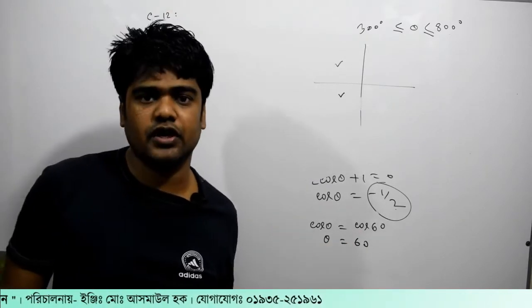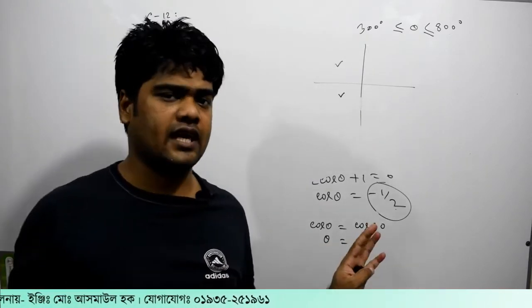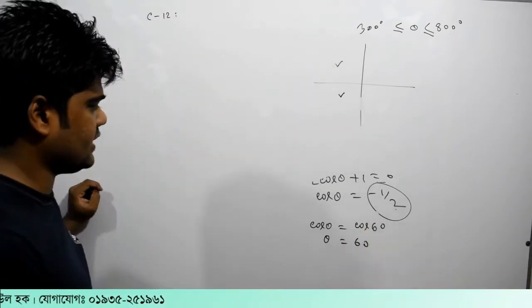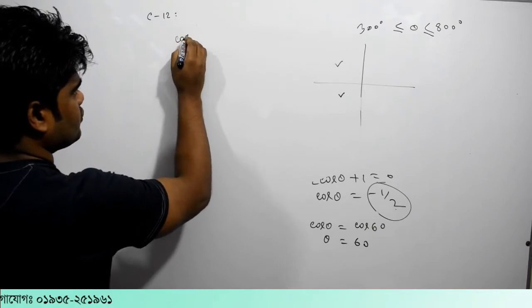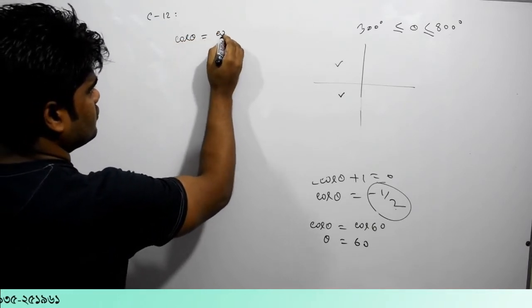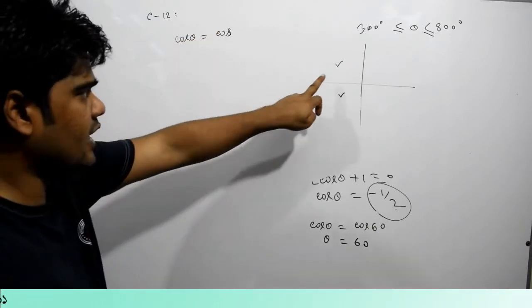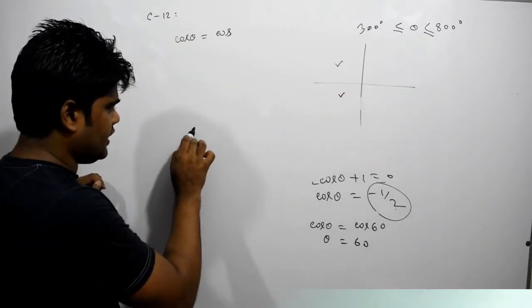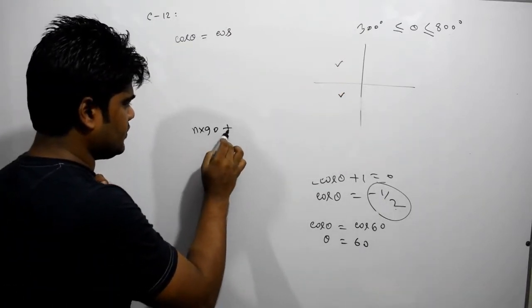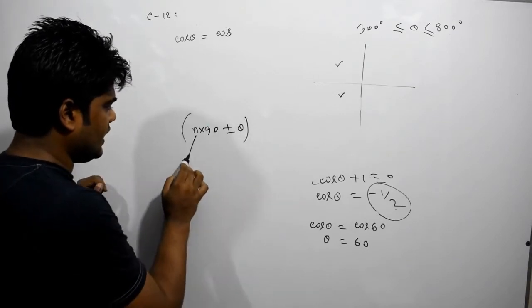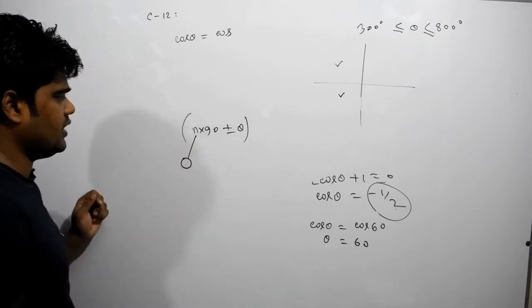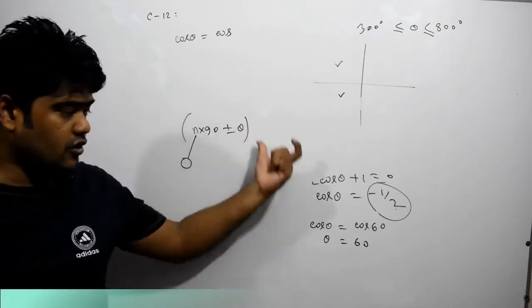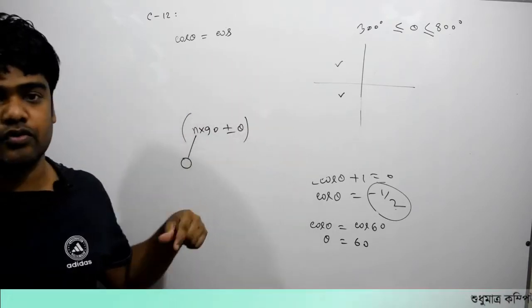We also have to calculate a 60-degree range — the values minus the range. Then we take a physical range from outside. Let us know: cos(theta) equal to cos. If the value of n×90 plus or minus theta, we will get the value of n×90 and the value of n.